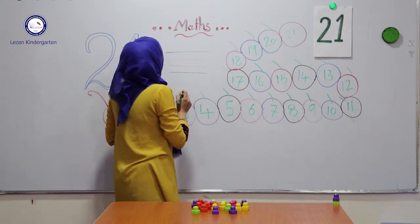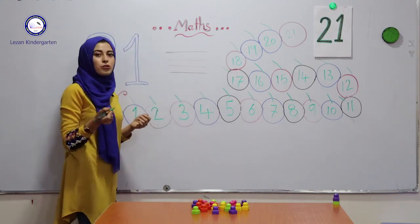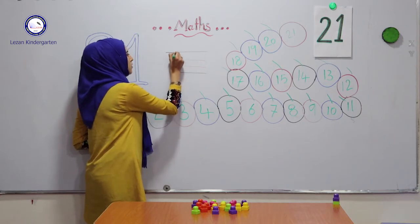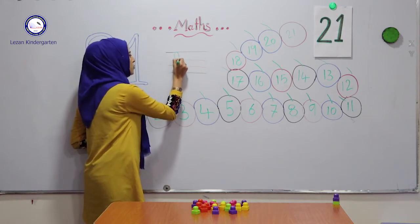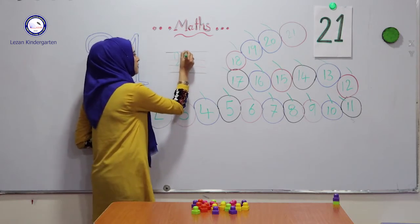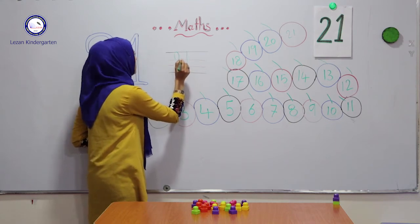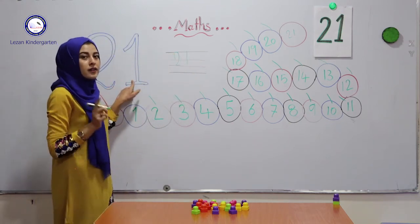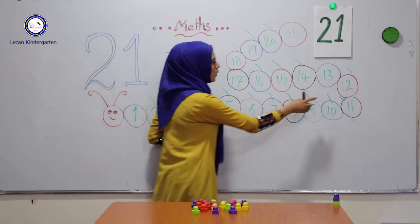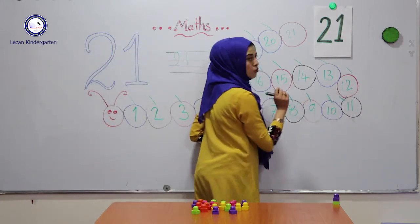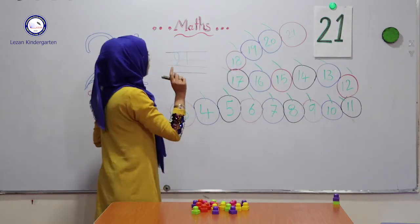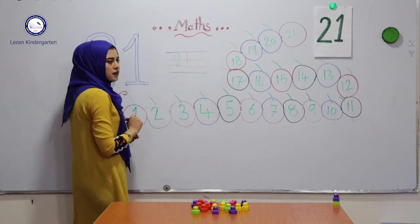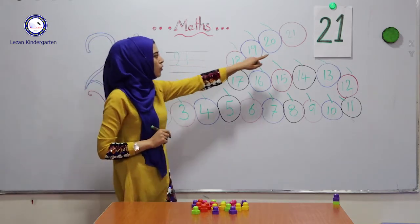Now let us know how to write 21. Okay? 2 and 1. Not 1 and 2. Don't forget: 2 and 1. 21.